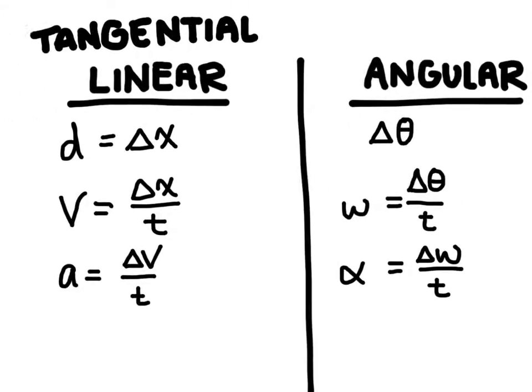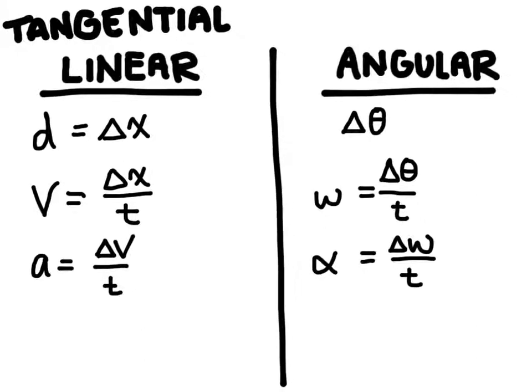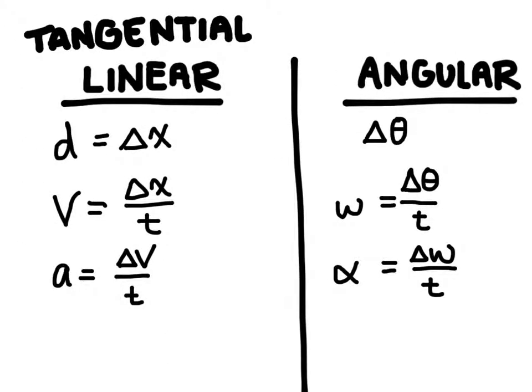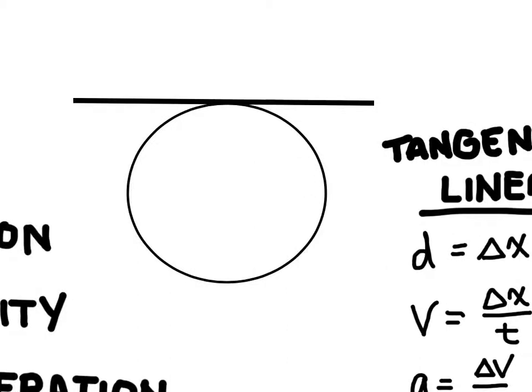So when we're converting from angular motion to tangential motion, all we have to do is multiply the angular quantity by the radius of the circle. By multiplying by the radius, we're going to be accounting for the whole distance of the circle.